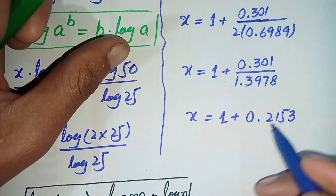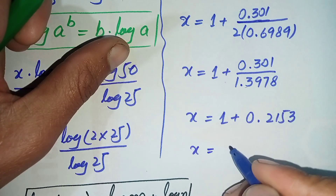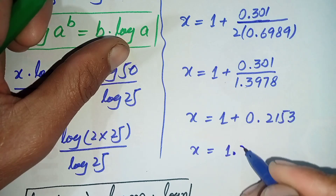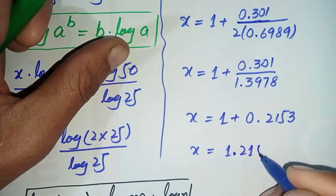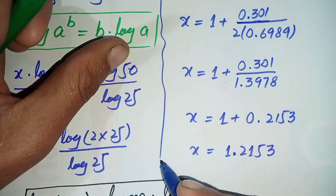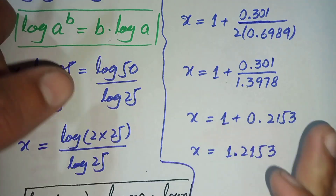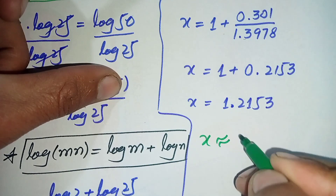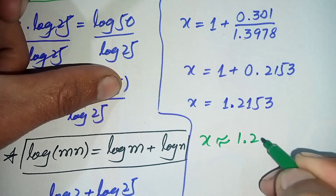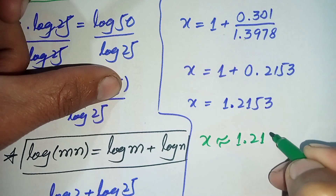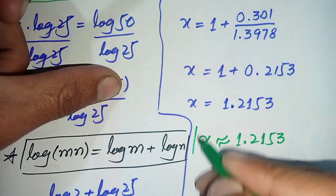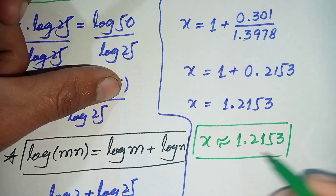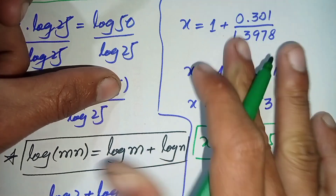Dividing 0.301 by 1.3978 gives approximately 0.2153. Adding 1 plus 0.2153, we get x is approximately equal to 1.2153. So the value of x is approximately 1.2153.